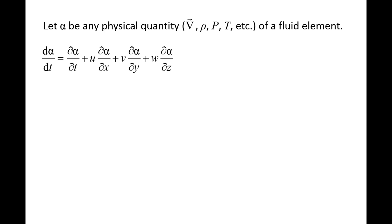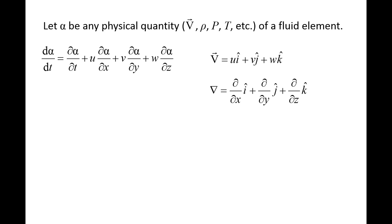We also can condense the equation by noting that the velocity vector v is lowercase u i-hat plus lowercase v j-hat plus lowercase w k-hat. The del operator is defined as partial/partial x i-hat plus partial/partial y j-hat plus partial/partial z k-hat. So we can rewrite the three spatial terms on the right as the dot product of the velocity vector and del operator, which operates on alpha.